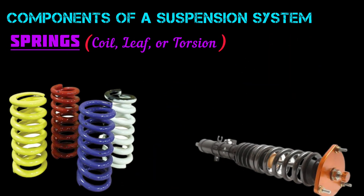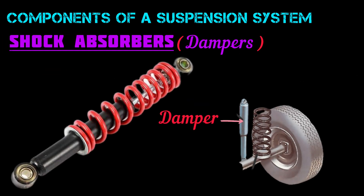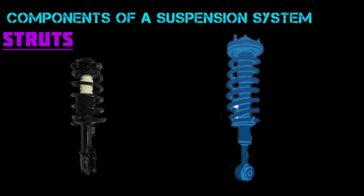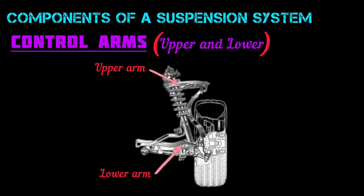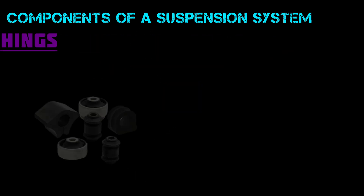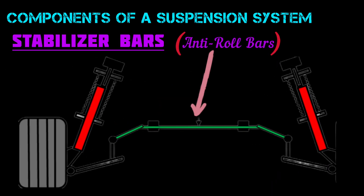Components of a suspension system: one, springs — coil, leaf, or torsion; two, shock absorbers and dampers; three, struts or control arms — upper and lower; five, bushings; six, stabilizer bars and anti-roll bars.